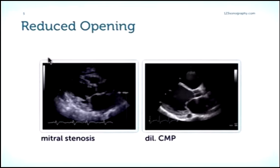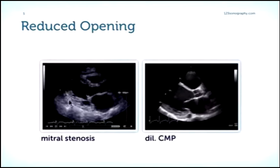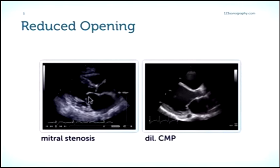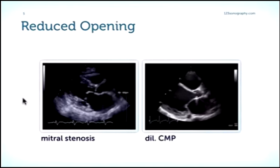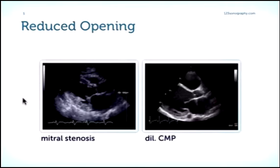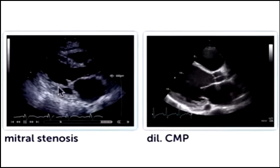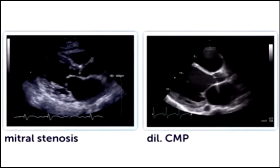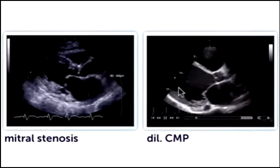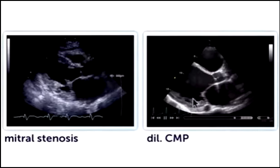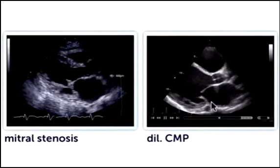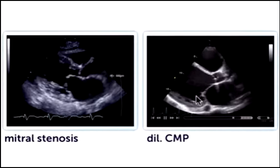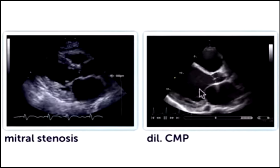Here's another example of a patient with doming of the anterior leaflet — maybe not as much doming as we saw previously. We have a reduction in the opening. And here we have an example of a patient who also has a reduced opening of the mitral valve, however no doming.